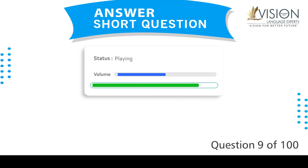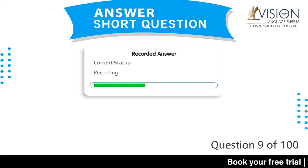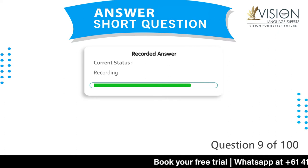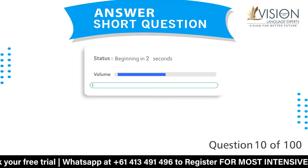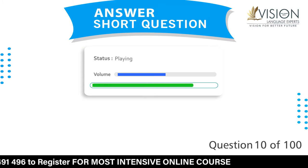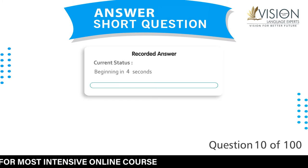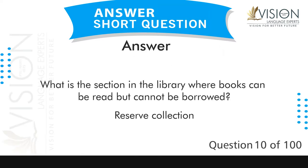How many years are there in a century? 100. What is the section in the library where books can be read but cannot be borrowed? Reserve collection.